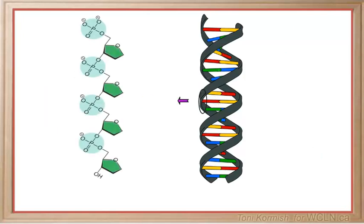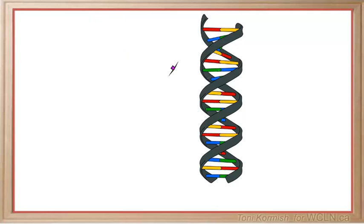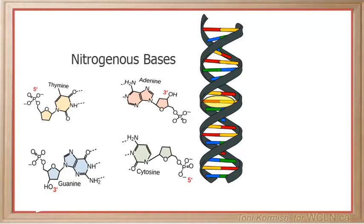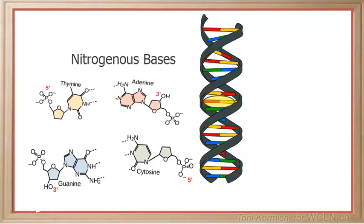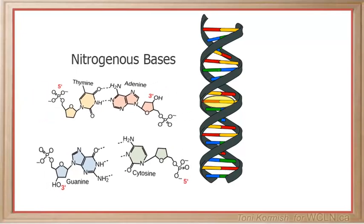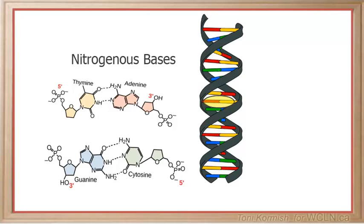The alternating sugar phosphate molecules form the backbone of each strand in the DNA double helix. The nitrogenous bases extend out from the backbone toward the center of the double helix, forming the rungs of the DNA ladder. Each base in one strand is matched with a complementary base in the other strand in accordance with the base pairing rules. Adenine always bonds with thymine and guanine always bonds with cytosine.